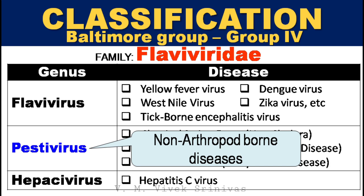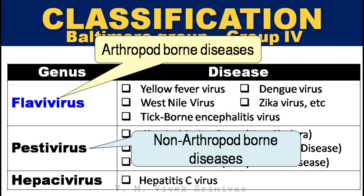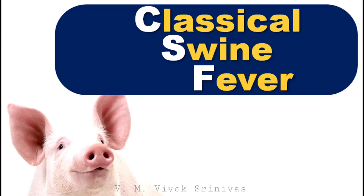Diseases under the genus Flavivirus are arthropod-borne viral diseases, which include yellow fever virus, West Nile virus, tick-borne encephalitis virus, dengue virus, Zika virus, and others. In this lecture we will discuss in detail on classical swine fever.